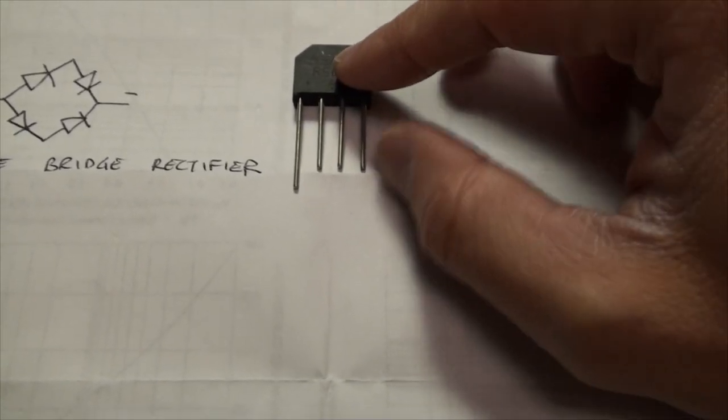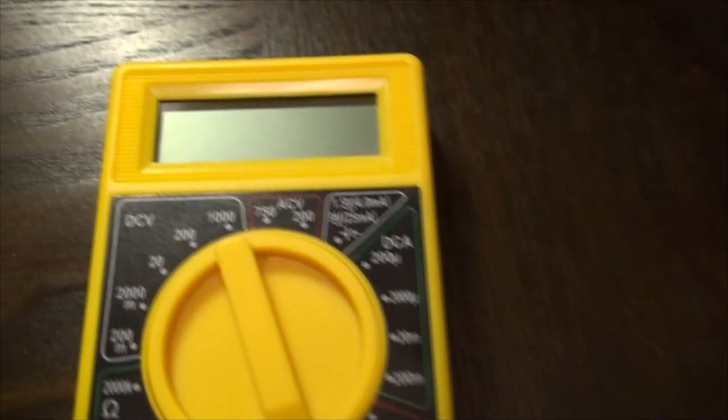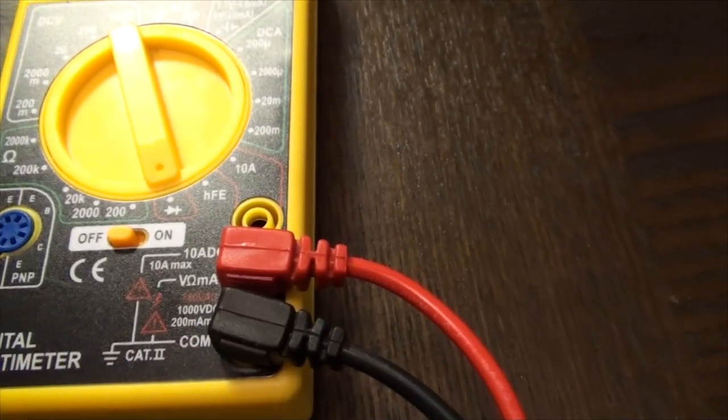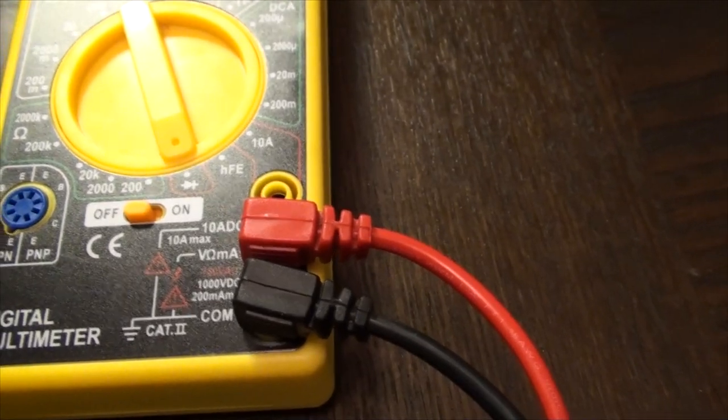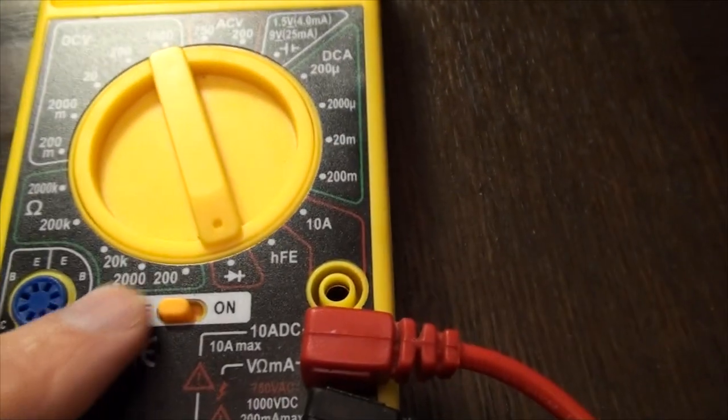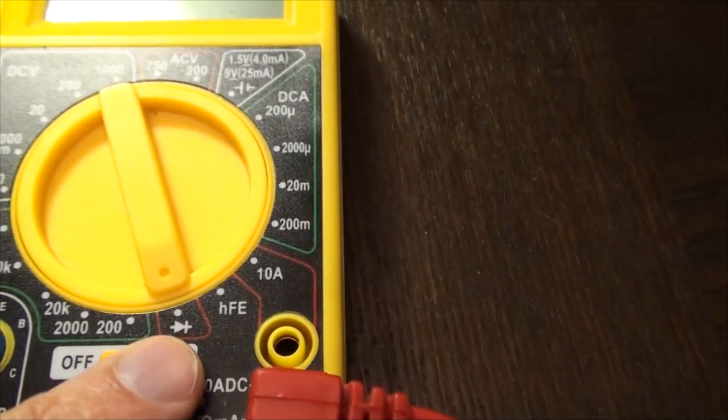The negative side has the shorter leg. To test with our multimeter, make sure that it's hooked up correctly with the red and the black wires, and then we'll use this diode setting.